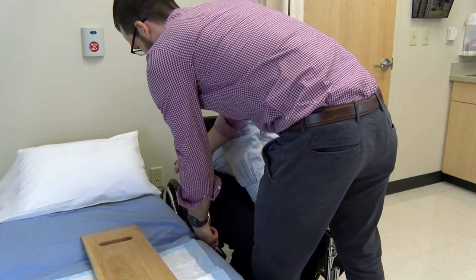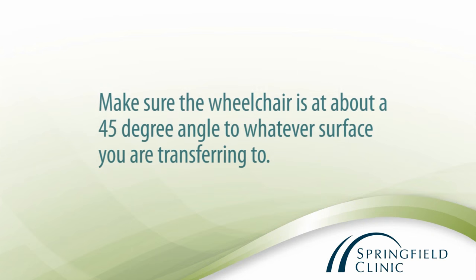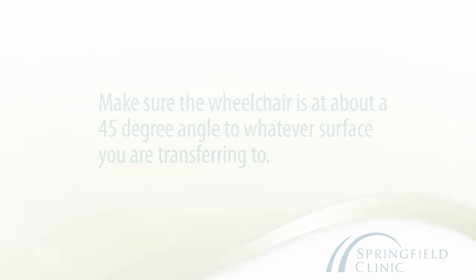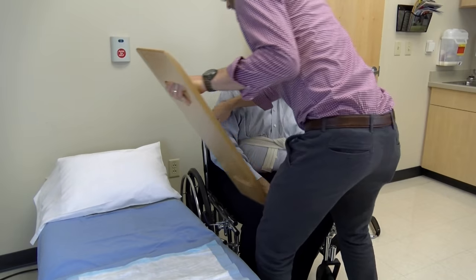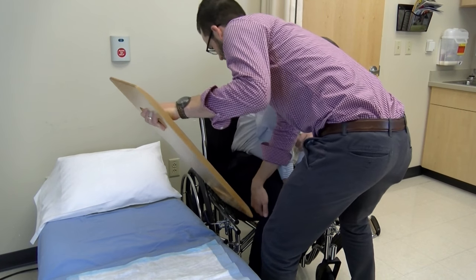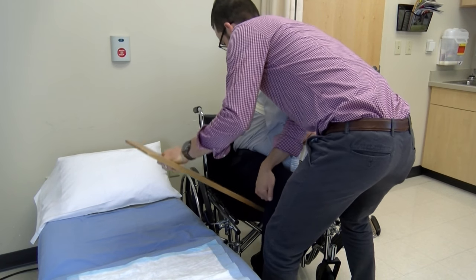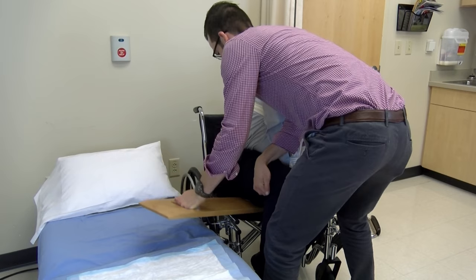Also remove the armrest from the wheelchair. Make sure the chair is at about a 45-degree angle to whatever surface you are transferring to. Have the patient lean to the side, away from the table you are transferring to, instructing the patient to lift the leg closest to the table.